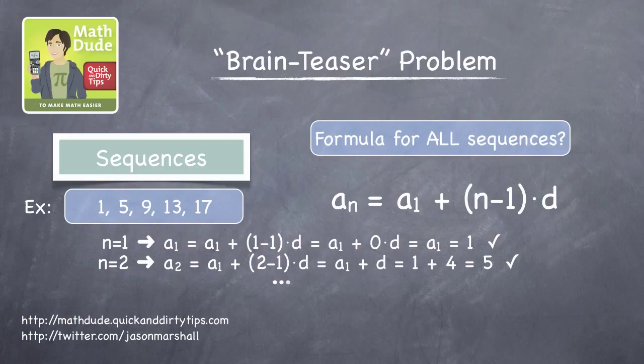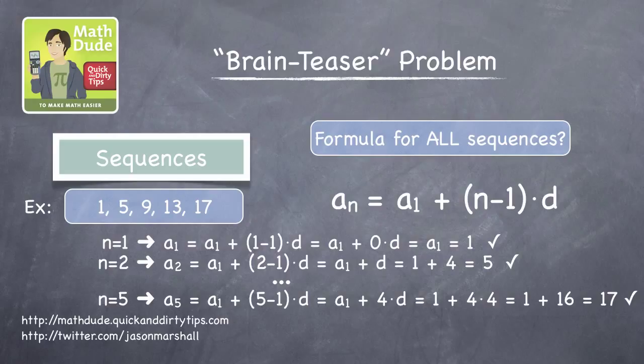Let's skip to n equals 5. a sub 5 equals a sub 1 plus 4 times d, which is just 1 plus 16. That equals 17. So, it always works.